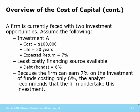Here we have a company that has two opportunities. One costs $100,000, has 20 years of life, and an expected return of 7%. The least expensive financing source available is debt at 6%. Since the company can earn 7% on the investment and it only costs 6% to do it, an analyst recommends they should undertake this investment.